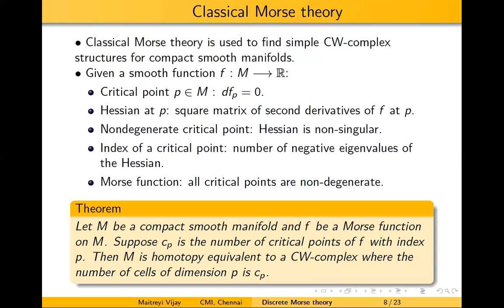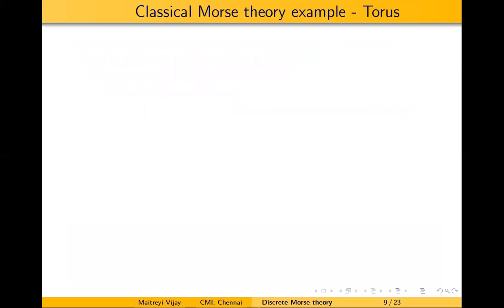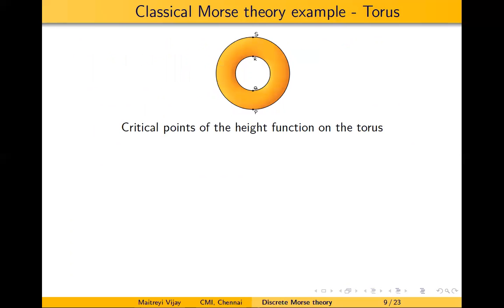This is the main theorem of classical Morse theory: if M is a compact smooth manifold and f is a Morse function on M, let C_p be the number of critical points of f with index p. Then M is homotopy equivalent to a CW complex where the number of cells of dimension p is C_p. I will illustrate this through the example of the torus. The Morse function we consider is the height function, and the critical points happen to be P, Q, R, and S.